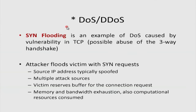Some features of DoS and DDoS attacks: the source IP address is almost always spoofed. There are multiple attack sources, especially in DDoS. The victim reserves buffer space for each connection, which can lead to memory exhaustion and bandwidth saturation. Computational power may also be consumed unnecessarily, because the victim spends so much time processing those fake requests.